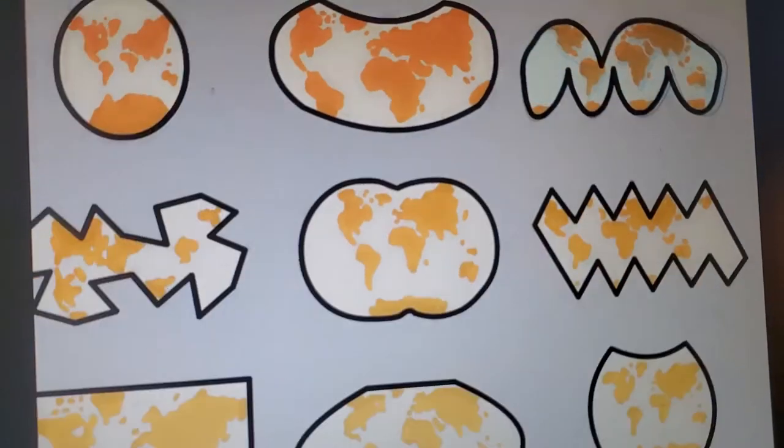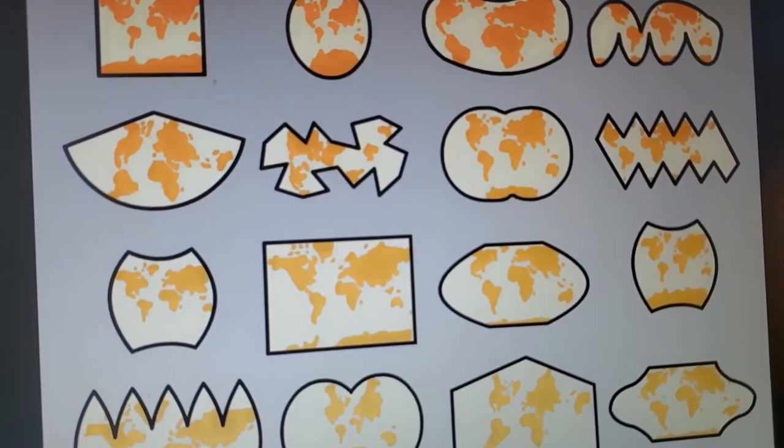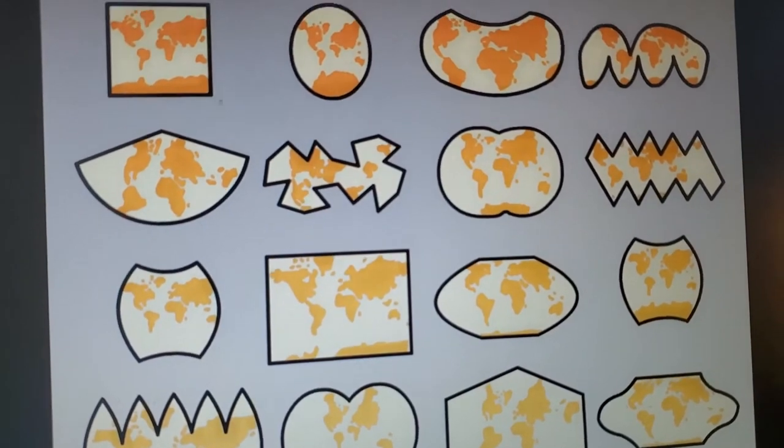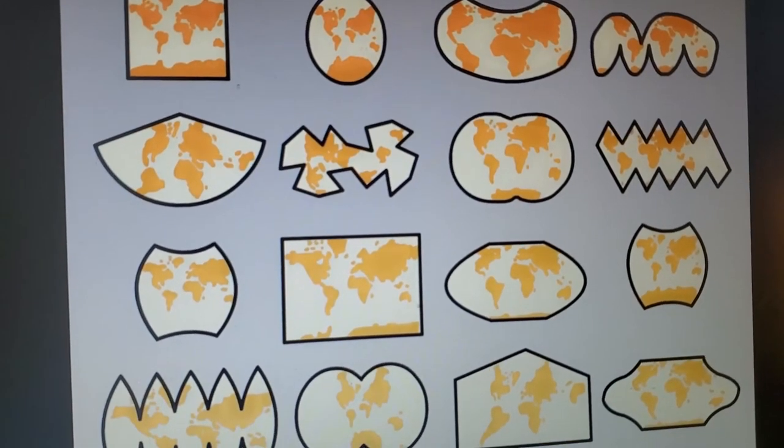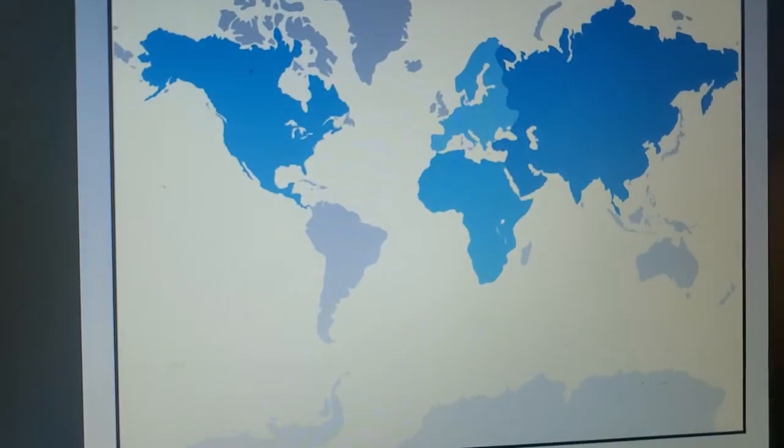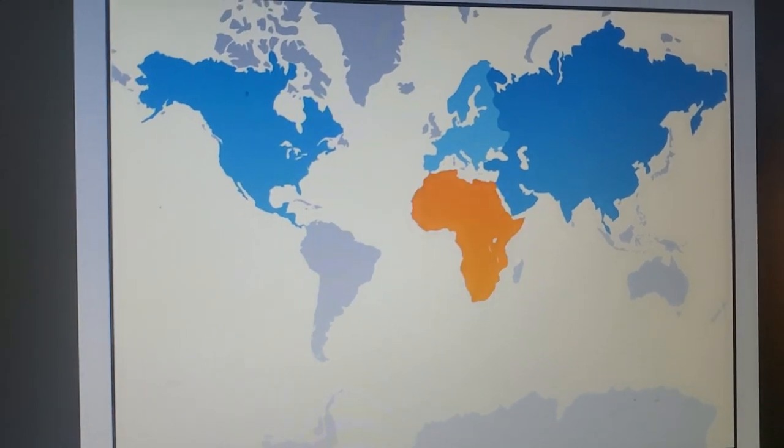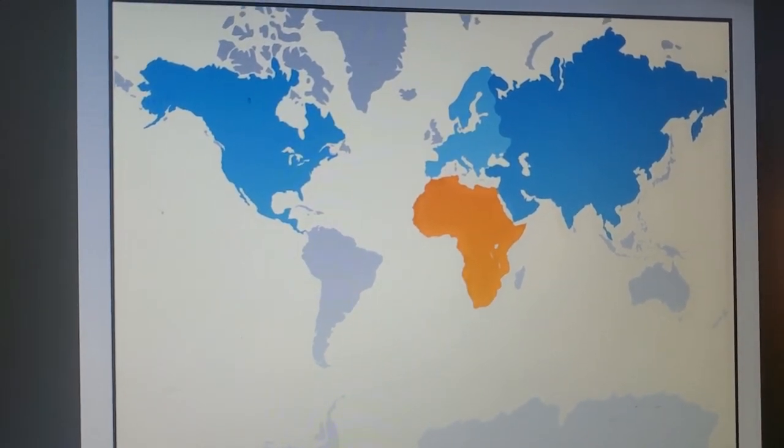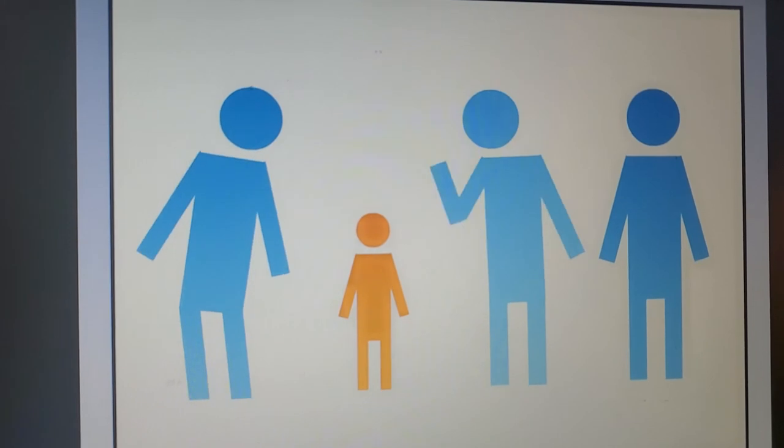Well, like I said, there is no perfect projection. They all contain some amount of distortion, which can distort how we understand the world. We've already seen how one projection makes Africa look smaller than it really is. How might that affect our ideas about the place?